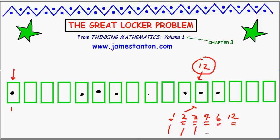Since 12 has six factors — 1, 2, 3, 4, 6, and 12 — this locker was touched six times. It was initially closed, so after six touches it will be: open, closed, open, closed, open, then closed. So locker number 12 will be closed. Each locker is touched a number of times equal to the number of factors it possesses.